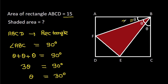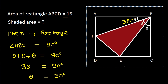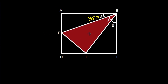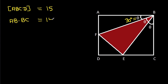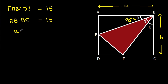We get theta is 30 degrees. The area of ABCD is 15, and area of ABCD equals AB times BC, which is 15. Suppose AB is A and BC is B, then A times B equals 15.